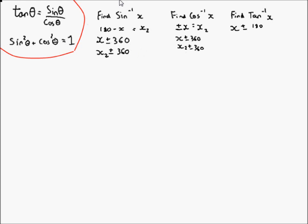For cosine, once you find x, you use plus or minus the answer — if it's positive, that same answer multiplied by minus 1 will also be a solution. Then the original answer plus or minus multiples of 360, and the second answer plus or minus multiples of 360. For tan, once you find x, you simply add multiples of 180.